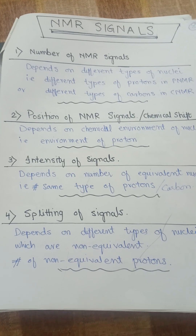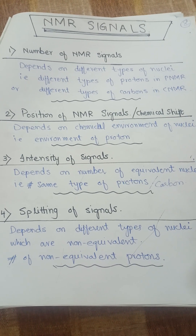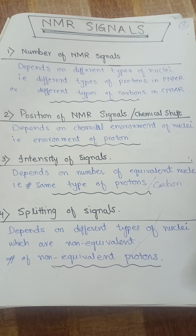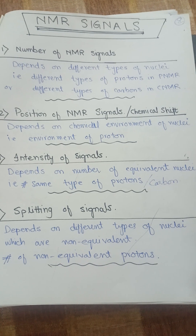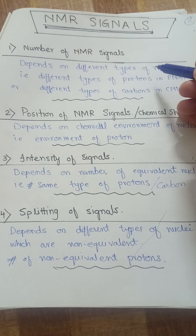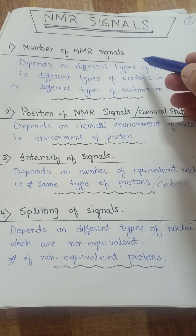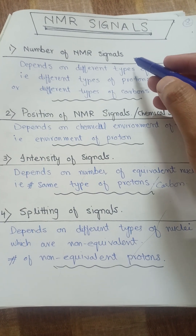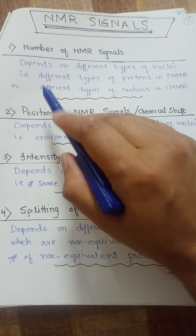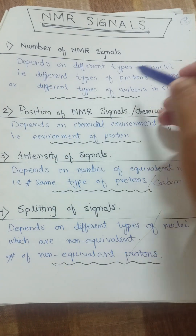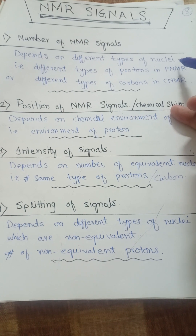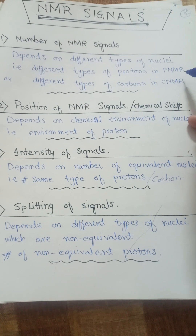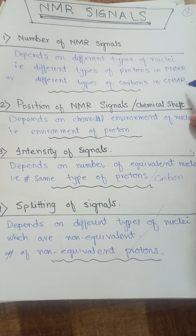Assalamualaikum. In this lecture video we will study characteristics of NMR signals. The first one is the number of NMR signals. The number of NMR signals in the spectrum of proton NMR or carbon NMR depends on different types of nuclei — it may be different types of protons in proton NMR or different types of carbons in carbon NMR.